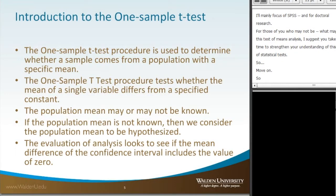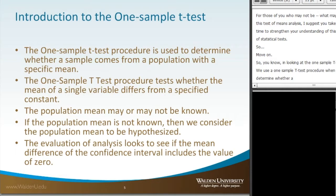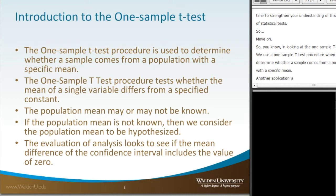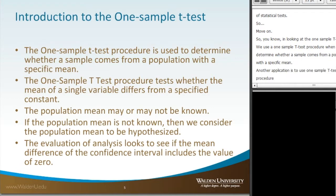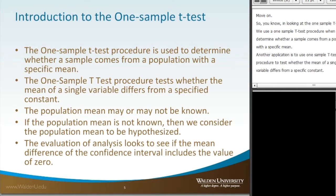In looking at the one-sample t-test, we use a one-sample t-test procedure when we want to determine whether a sample comes from a population with a specific mean. Another application is to use the one-sample t-test procedure to test whether the mean of a single variable differs from a specific constant. In both tests, we're taking the sample mean and comparing it against a fixed value.